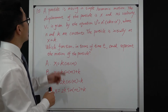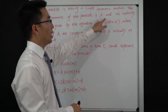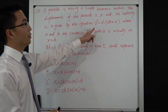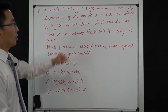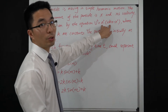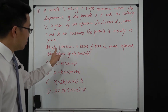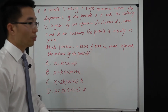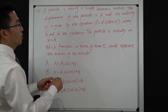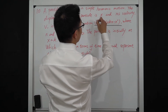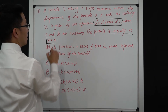Let's go to question 10. A particle is moving in simple harmonic motion. The displacement of the particle is x and its velocity v is given by v² equals n² times (2kx − x²), where n and k are constants. The particle is initially at x equal to k. Which function in terms of time t could represent the motion of the particle?